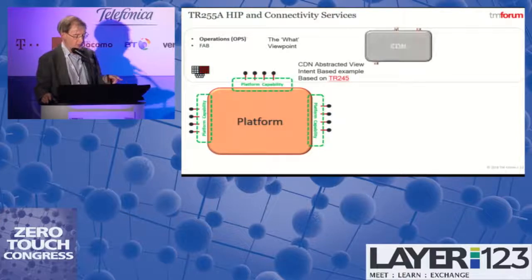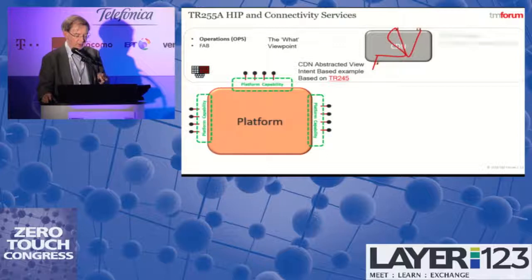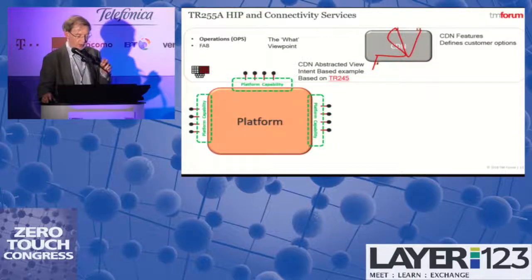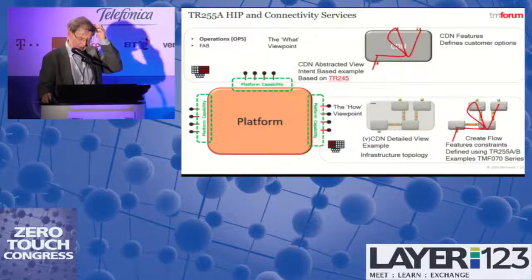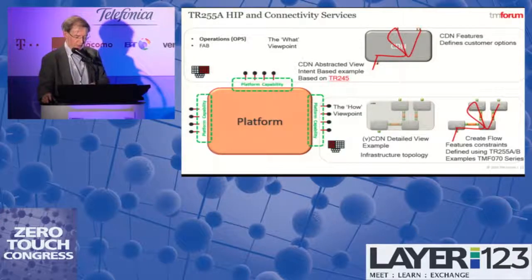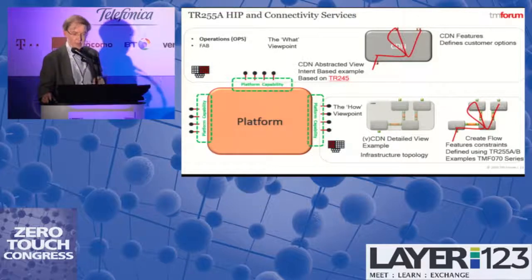Looking at an example of a 'what' viewpoint: we've taken the abstracted view of a service — a content delivery network, basically a black box with a series of endpoints. Customers want to establish particular kinds of flows across this, done by features they can request when placing an order. Internally, that abstract black-box view requires an internal topology corresponding to VNFs and network services, and we need to describe rules for creating flows.